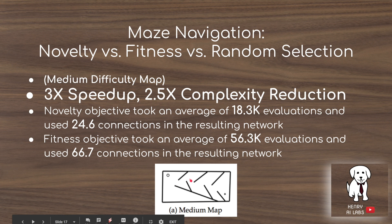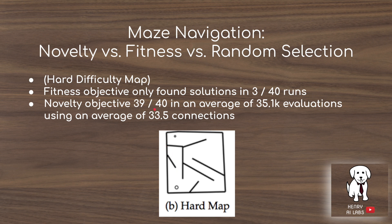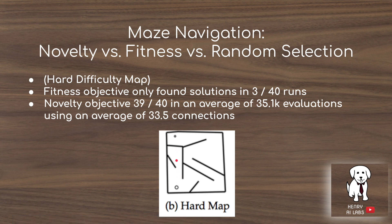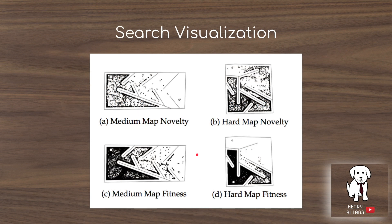On the medium map, the agent starts at one point and must navigate around to reach the finish line. On the hard map, the fitness objective only finds solutions in 3 out of 40 runs, whereas the novelty objective finds a solution in almost every run — averaging 35.1 thousand evaluations and only 33.5 connections. The hard map is particularly deceptive: a fitness-based agent keeps moving closer to the objective and gets stuck in a local optimum, while novelty search explores more of the space radially and actually finds the solution. Visualizations confirm the novelty algorithm has a far greater exploration component.